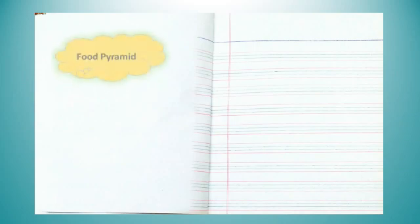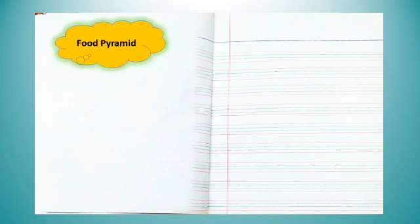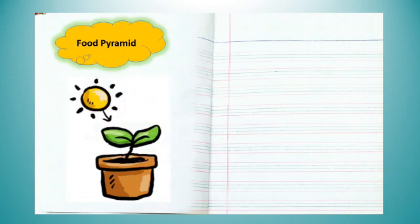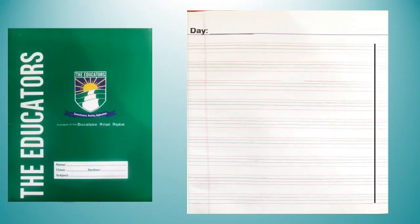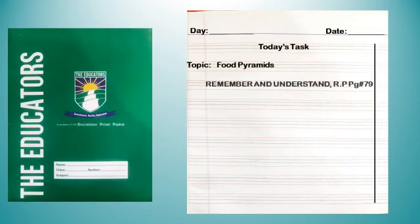Open your notebooks to the interleave page. Here we make our title page: first draw a cloudy shape and write the topic 'Food Pyramid.' After this, draw a sun and a flower pot and color them with your own choice. Then our title page is ready. Draw the margin line, write the day, date, and today's task, then write the topic: Food Pyramids — Remember and Understand, Resource Pack page number 79.